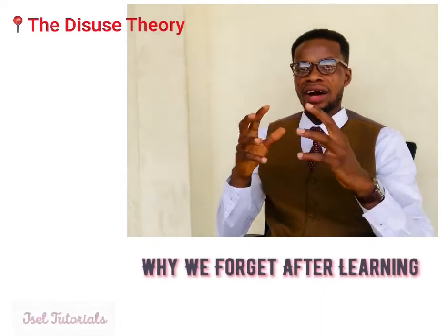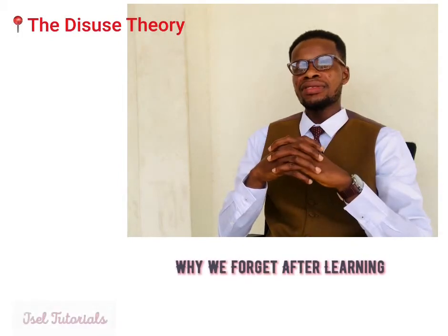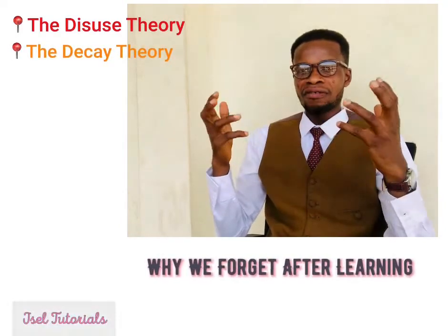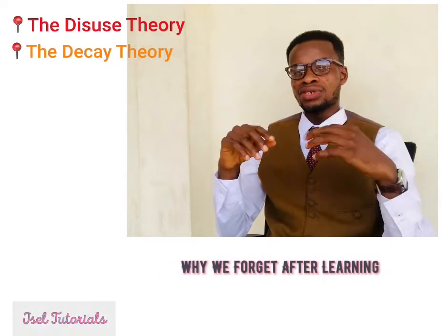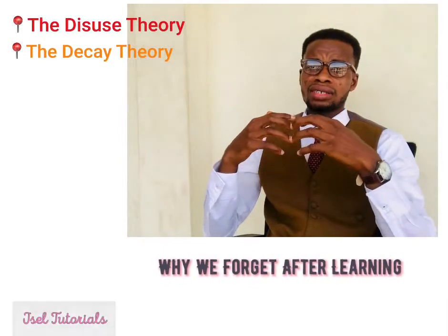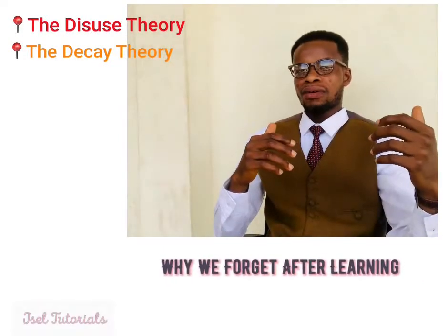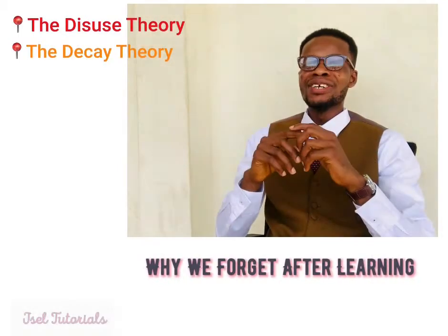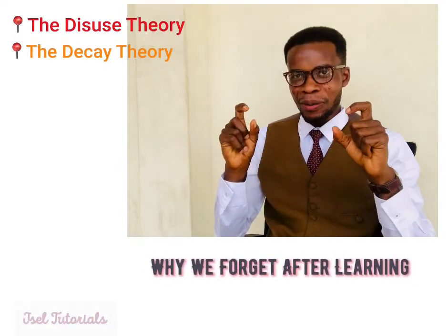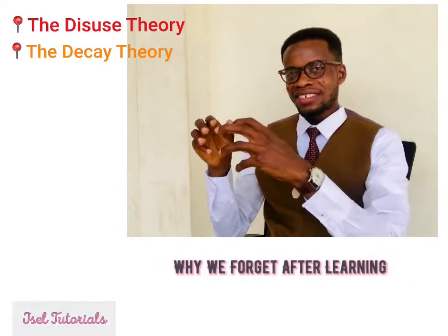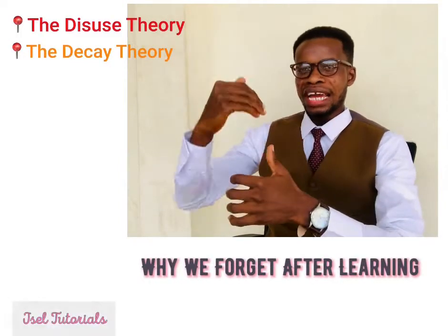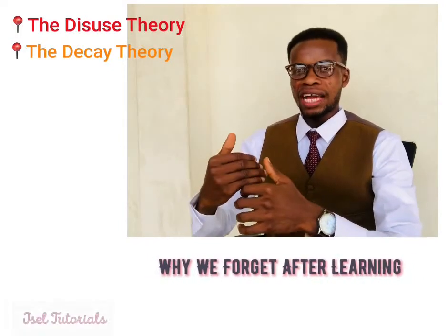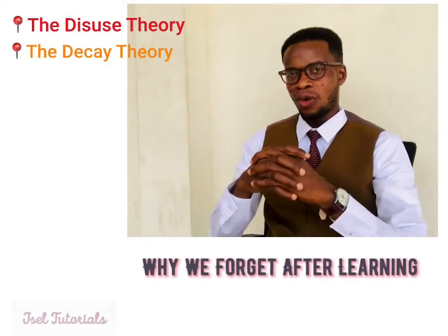The second theory has to do with decay. There is a slight difference between disuse and decay. With decay, the information is there, but naturally, with the passage of time, it gradually fades away — especially when that information is not organized well in your memory. Just as when you write an essay or have a conversation, you organize your ideas and are awarded marks for organization of facts — the brain works the same way.